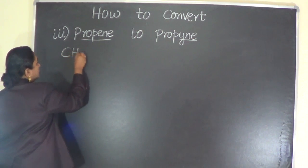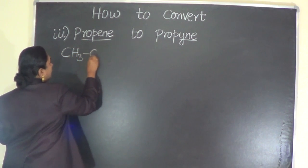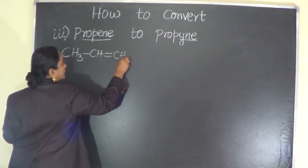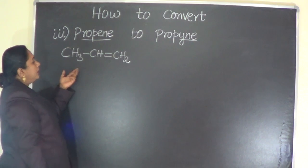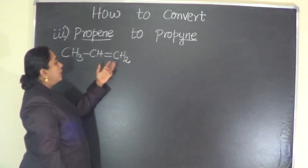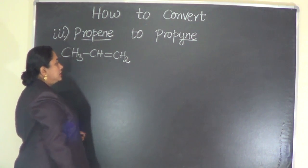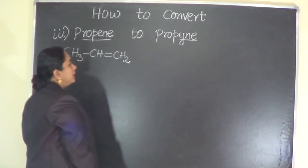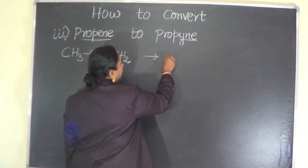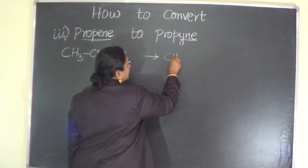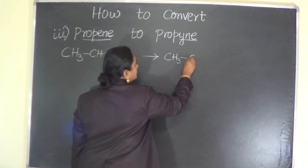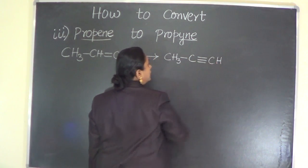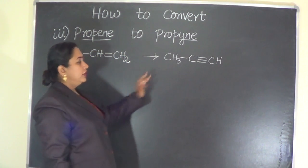First, let us write the structure of propene. So this is the structure of propene: CH3-CH double bond CH2. Now this has to be converted into propyne, that is CH3-C triple bond CH.